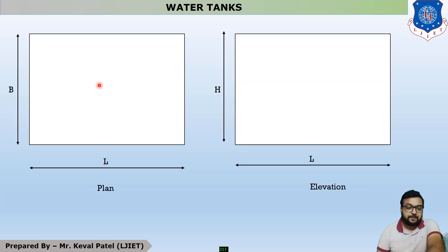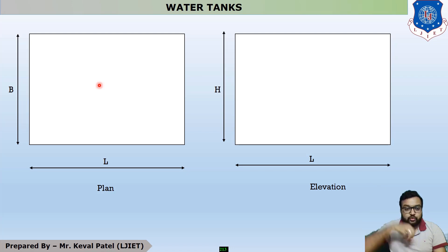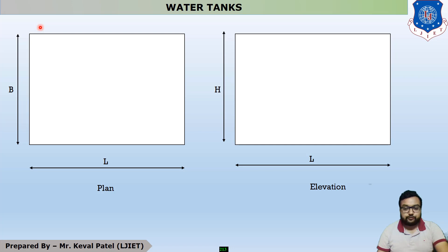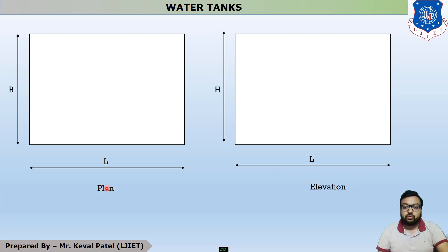You can see that this is the plan of the rectangular water tank. The plan is the top view showing length and width. This is the length of the water tank and this is the width. Viewing from the elevation side, we see two dimensions: L and the edge, which equals the height H.